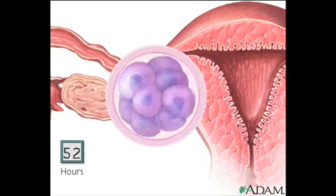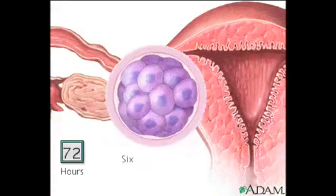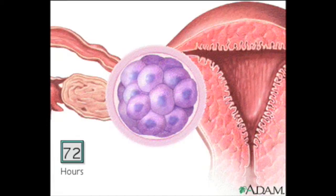At the end of three days, the fertilized egg cell has become a berry-like structure made up of 16 cells. This structure is called a morula, which is Latin for mulberry.